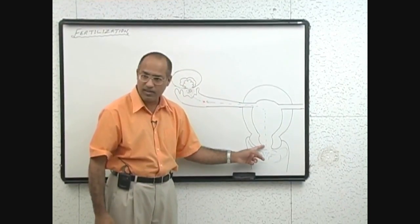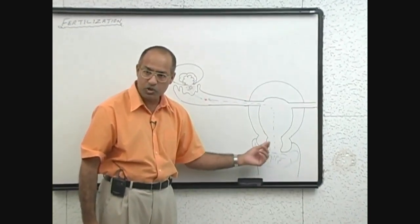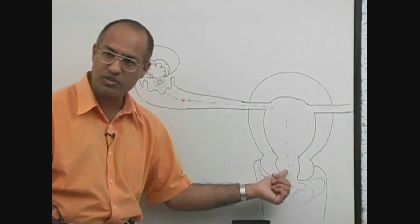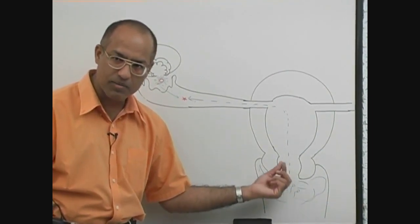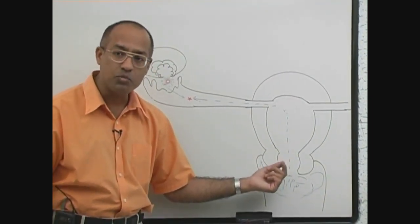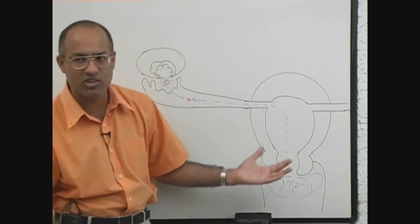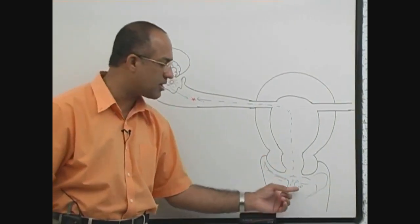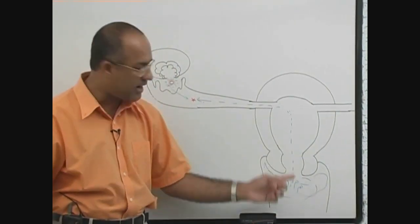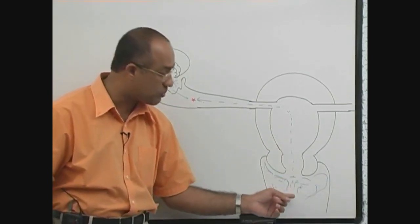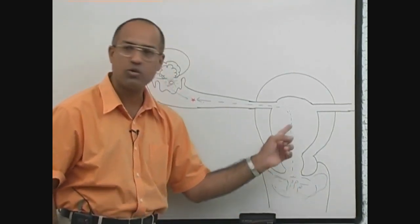This is good for the sperm. That mucus plug which is present in the cervical canal becomes thin and less viscid and more copious, abundant, stringy, and all these things favor the movement of the sperm. So sperms pass through the cervical canal.